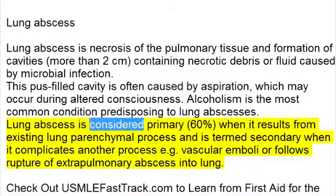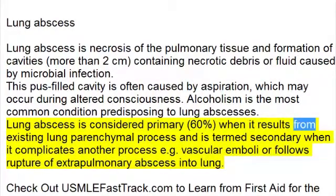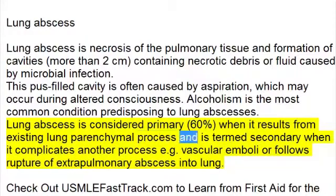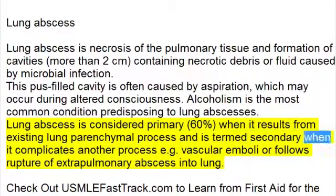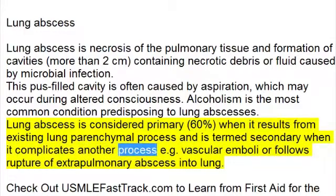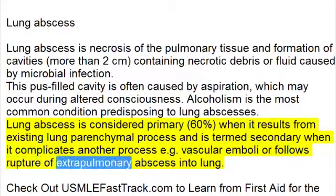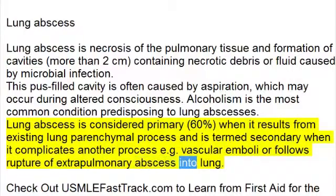Lung abscess is considered primary (60%) when it results from an existing lung parenchymal process, and is termed secondary when it complicates another process, such as vascular emboli or follows rupture of an extra-pulmonary abscess into the lung.